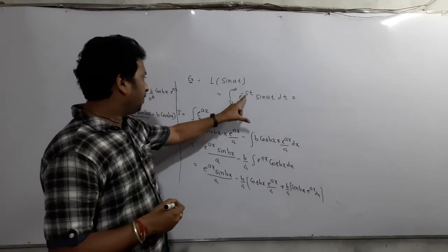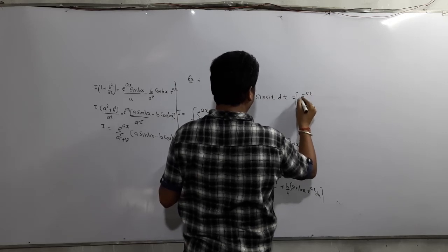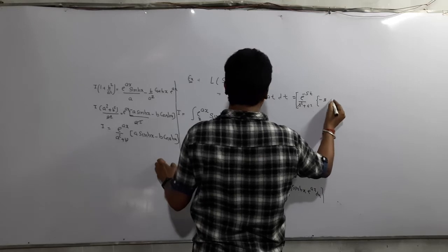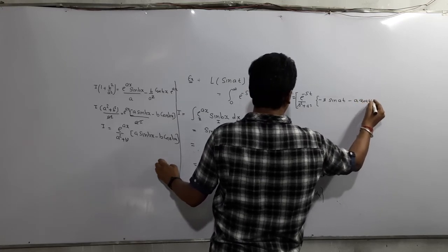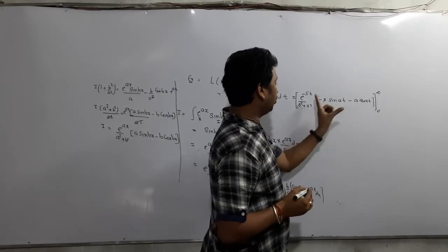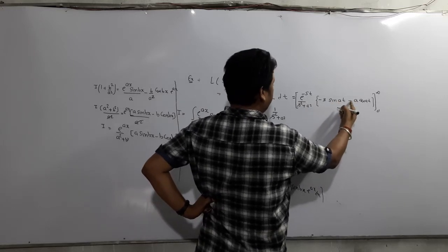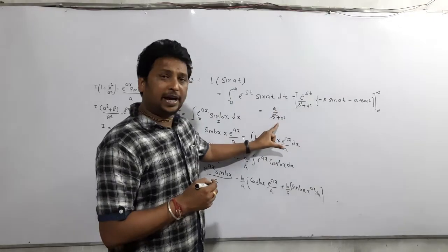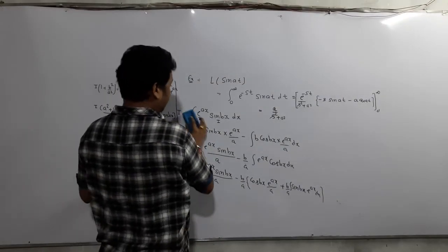Now putting the values: in place of a we have minus s, and in place of b we have a. So it becomes e to the power minus st over (s² + a²) times (−s·sin(at) − a·cos(at)), with limits 0 to infinity. When we put infinity, the exponential term goes to 0. When we put 0, we get 1/(s² + a²) times (0 − a·(−1)) = a/(s² + a²). So Laplace of sin(at) is a/(s² + a²). Similarly, Laplace of cos(at) can be derived in the same way.